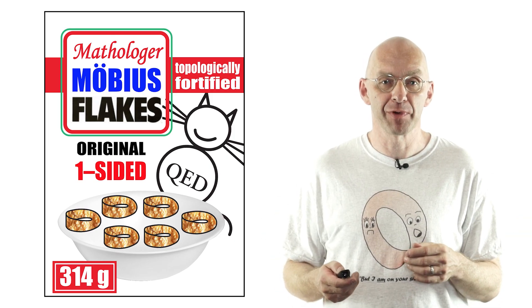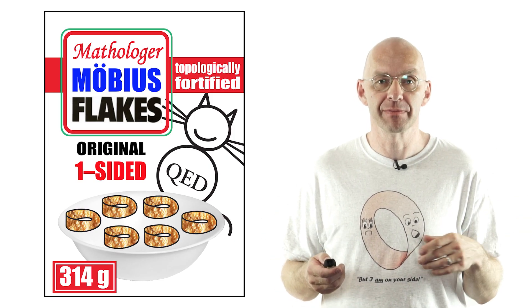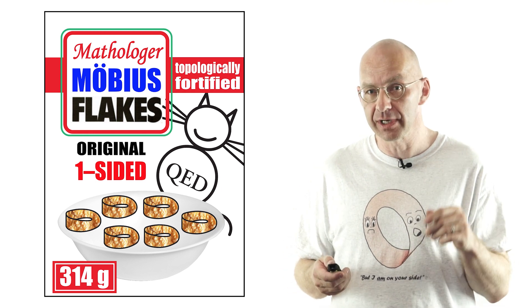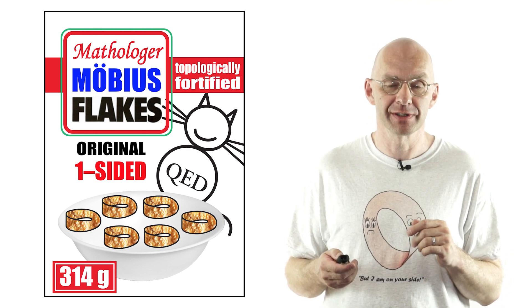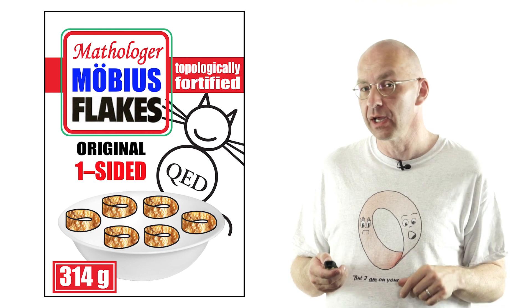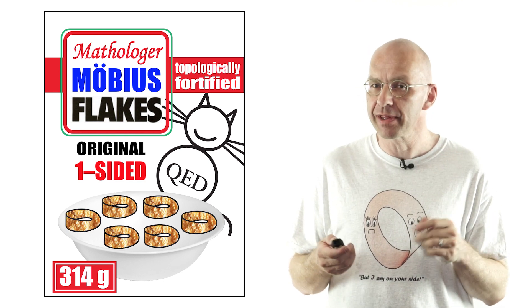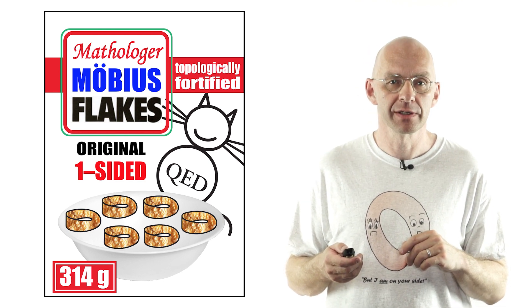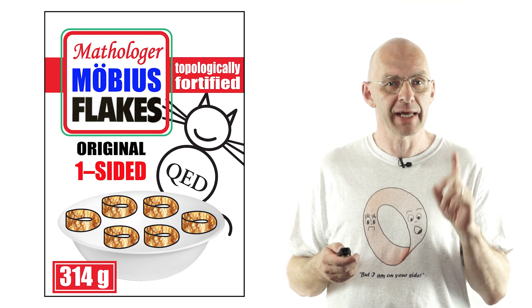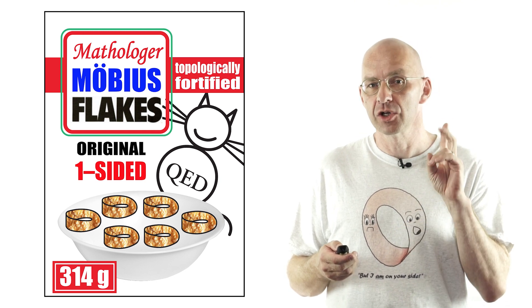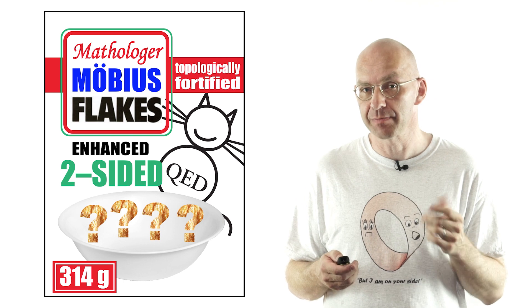You're watching Mathologer video and that probably means you're eating Klein bottles and Möbius strips for breakfast and you know that these tasty mathematical surfaces all have just one side. Except, and only real mathematical connoisseurs seem to know this, there are Klein bottles and Möbius strips that have two sides. Let me explain.